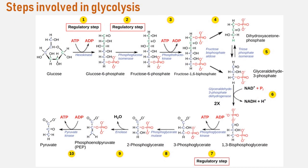In summary, one glucose molecule breaks down into 2 pyruvate molecules and creates 2 net ATP molecules and 2 NADH molecules by glycolysis. Therefore, glycolysis generates energy for the cell and creates pyruvate molecules that enter into the aerobic Krebs cycle, also called the citric acid cycle or tricarboxylic acid cycle.